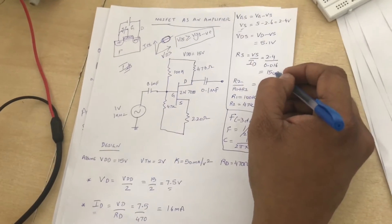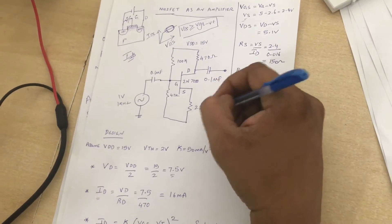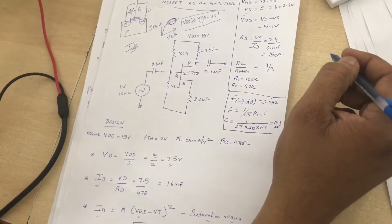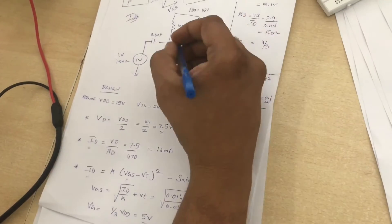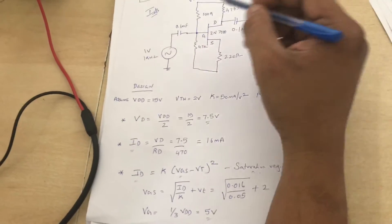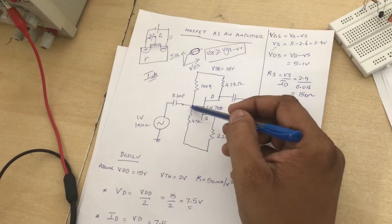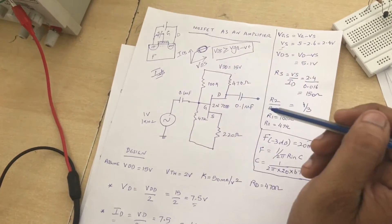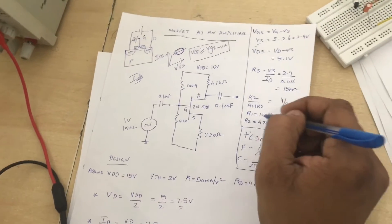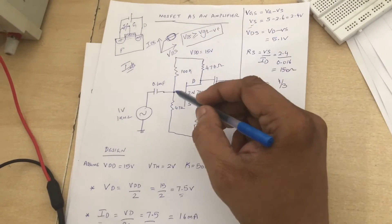And the potential divider here, R2 by (R1 plus R2) should be 1/3, since we have assumed that the gate voltage should be 1/3 of VDD. So we can suitably assume the value of R1 and R2.